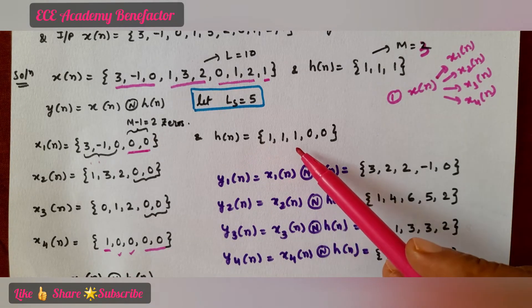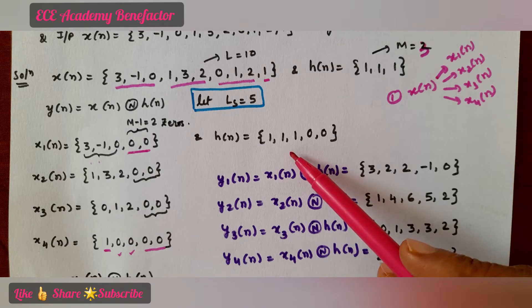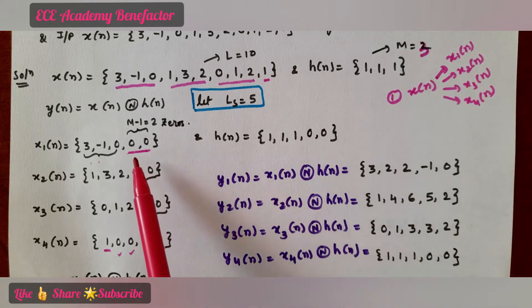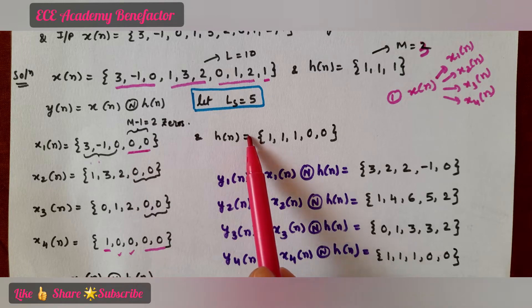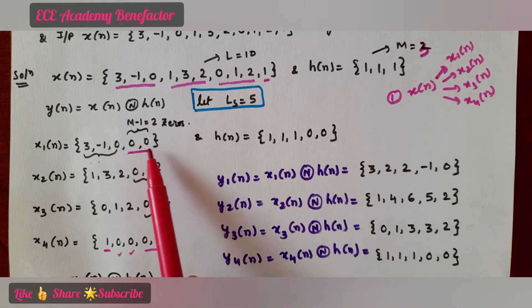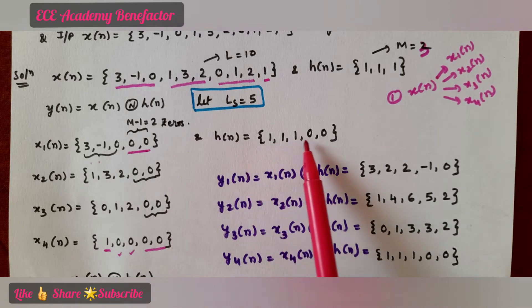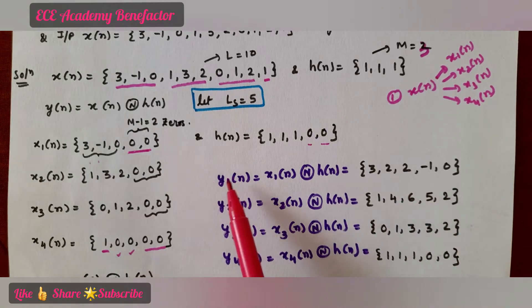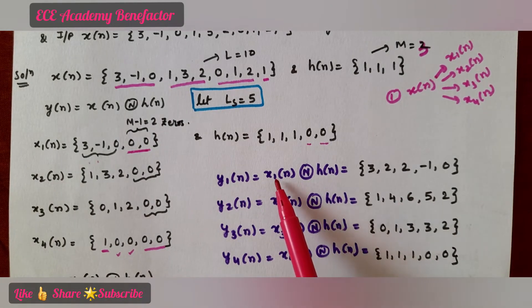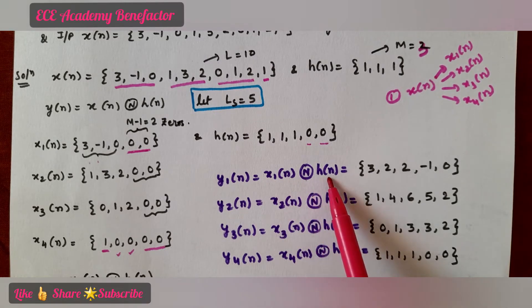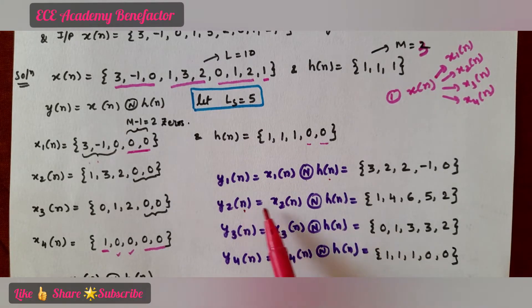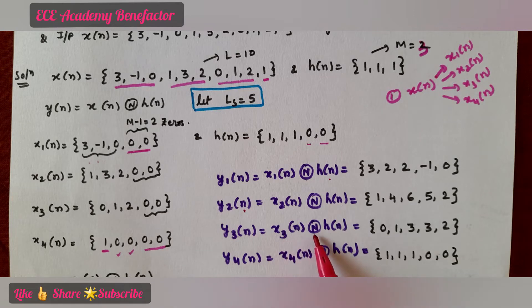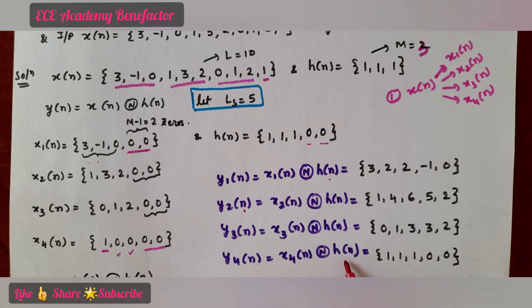h(n) is given as {1, 1, 1}. While performing circular convolution, both sequences must be of the same length. Since x1(n) is of length 5, we add 2 zeros to h(n) to make it length 5. Now we find y1(n) = x1(n) ⊛ h(n), y2(n) = x2(n) ⊛ h(n), y3(n) = x3(n) ⊛ h(n), y4(n) = x4(n) ⊛ h(n).